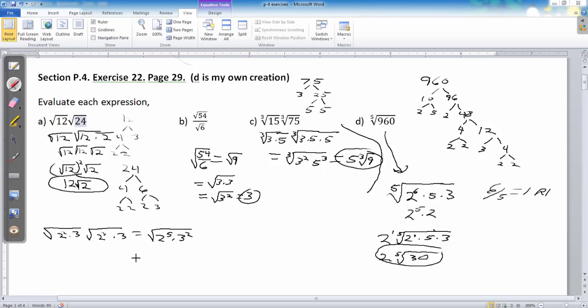And then we can play this game we were playing on this problem. You look at the index, which remember for a square root is 2. 2 divides into 5 twice, so that means I get to bring out 2, 2's, and I get to bring out 1, 3.